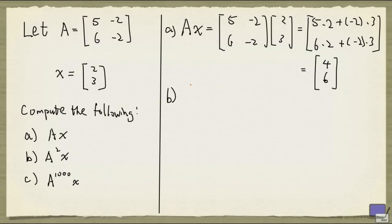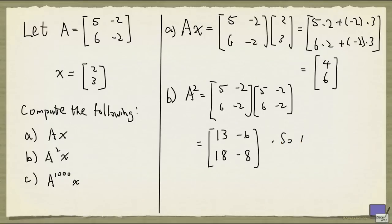Now what about part B? Let's work out what A squared is. A squared is 5 minus 2, 6 minus 2 times 5 minus 2, 6 minus 2. And that will give us this matrix here. And so A squared times x is 8 and 12.